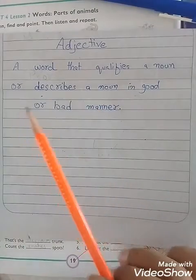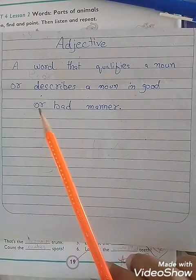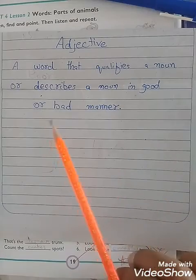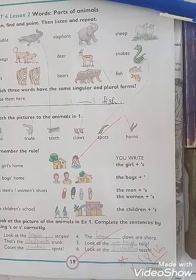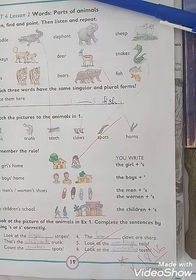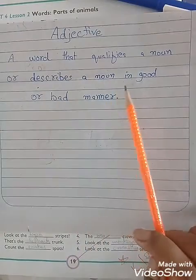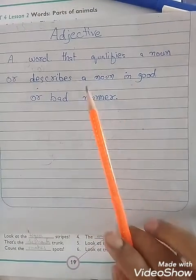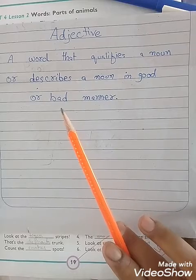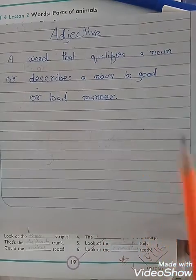Adjectives are a word that qualifies a noun or describes a noun in a good or bad manner. Adjective is a word that qualifies a noun, or it describes a noun in a good or bad manner — it tells something about a noun's qualities or any bad things, describing a noun in every manner.